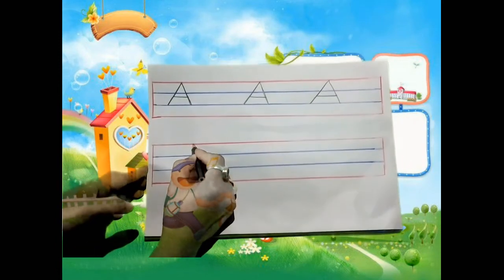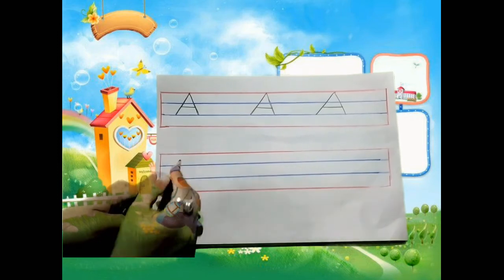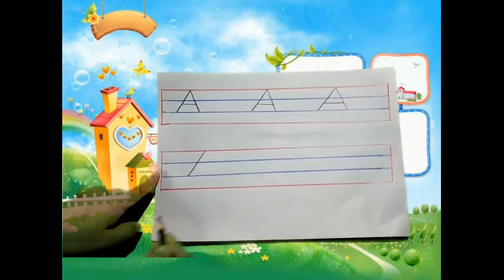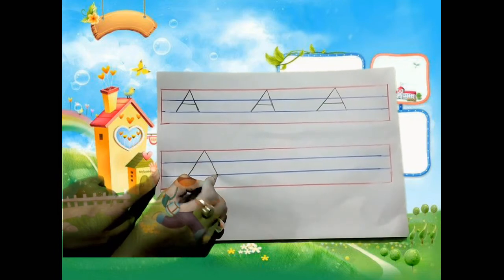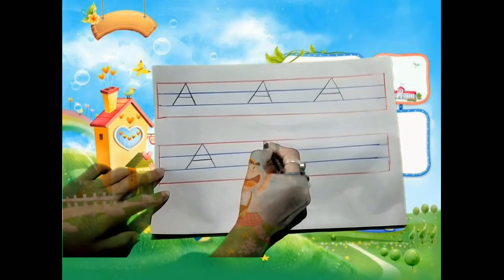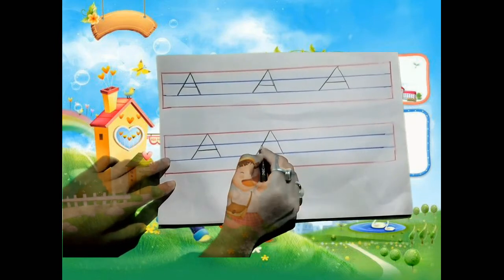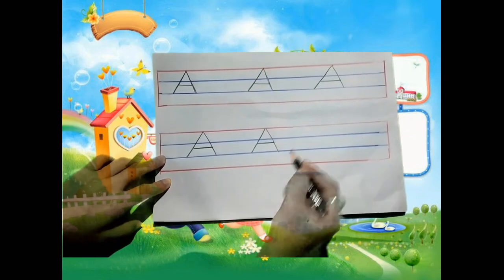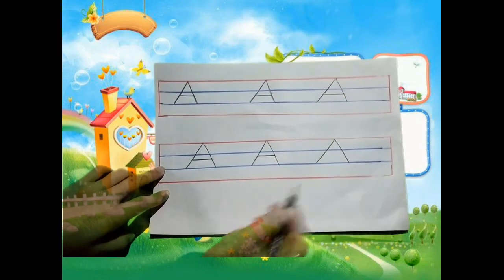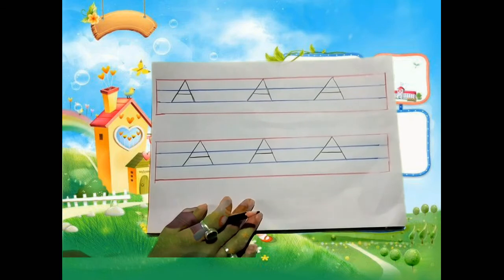Let's try again: slanting line, slanting line, sleeping line. One more time — 1, 2, 3. Three lines. Starting from the first line: slanting line, slanting line, sleeping line. Again: slanting line, slanting line, sleeping line. This is how we write letter A.